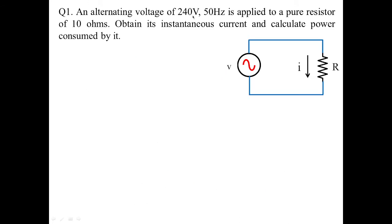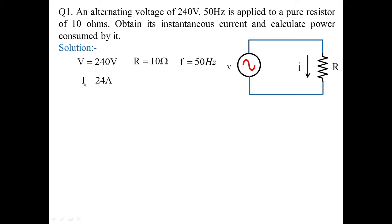An alternating voltage of 240 volts, 50 Hz is applied to a pure resistor of 10 ohms. We need to obtain its instantaneous current and calculate power consumed. The given parameters are: voltage = 240 V, R = 10 ohms, frequency = 50 Hz. Using Ohm's law, V = IR, so I = V/R = 240/10 = 24 amperes.